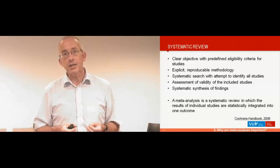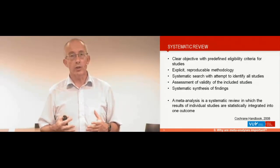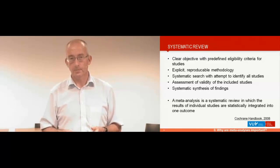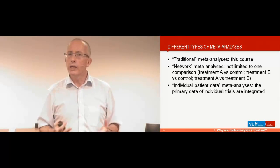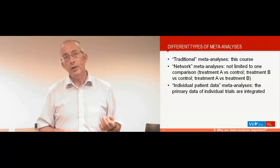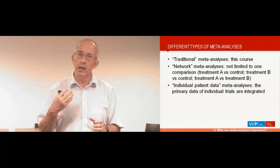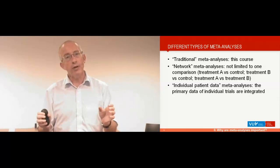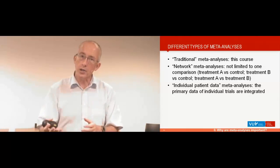A meta-analysis is a specific type of systematic review in which the results of individual studies are statistically integrated into one outcome. There are different types of meta-analysis. What I will teach in this course is what I call the traditional meta-analysis — a comparison of two groups, a treatment group and a control group — where you pool effect sizes of those two groups across studies.